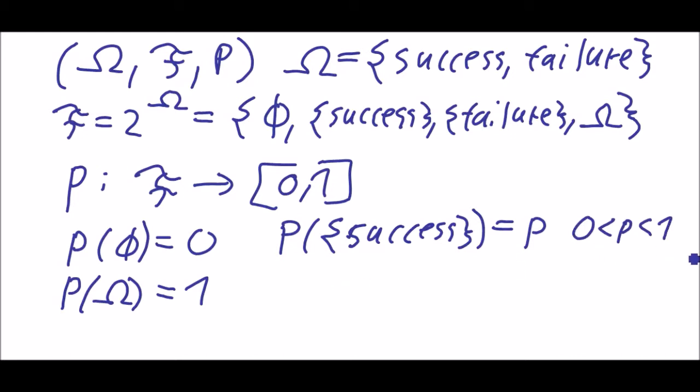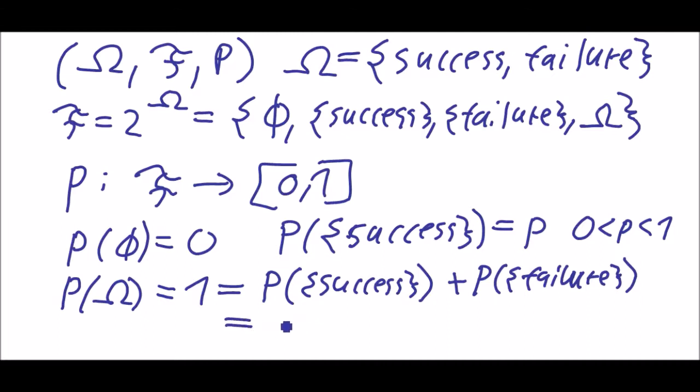Certainly not 0 and not 1 because then it would be boring. And P of omega is the same as P of success plus P of failure, because those both are distinct events. And therefore P of failure is the same as 1 minus p.